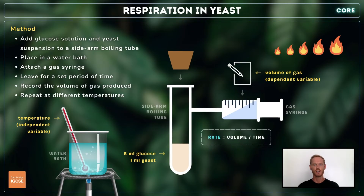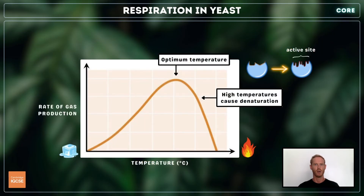Carbon dioxide collects in the gas syringe because yeast respires. As temperature rises, enzyme activity increases, resulting in a faster rate of respiration and carbon dioxide production. This continues until an optimum temperature is reached, after which enzymes begin to denature, and the rate of respiration slows.